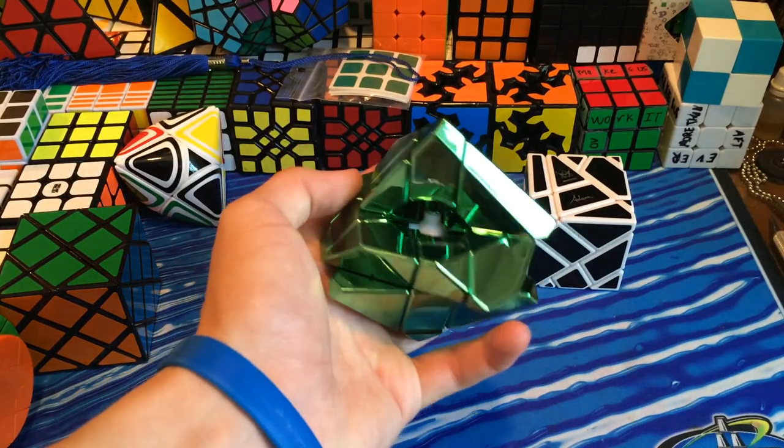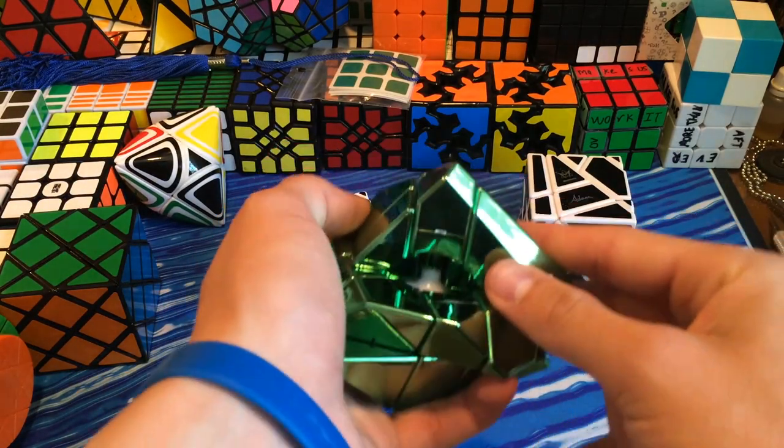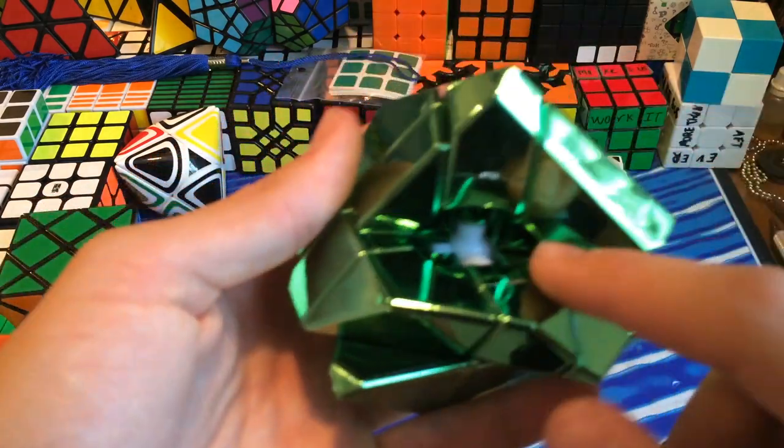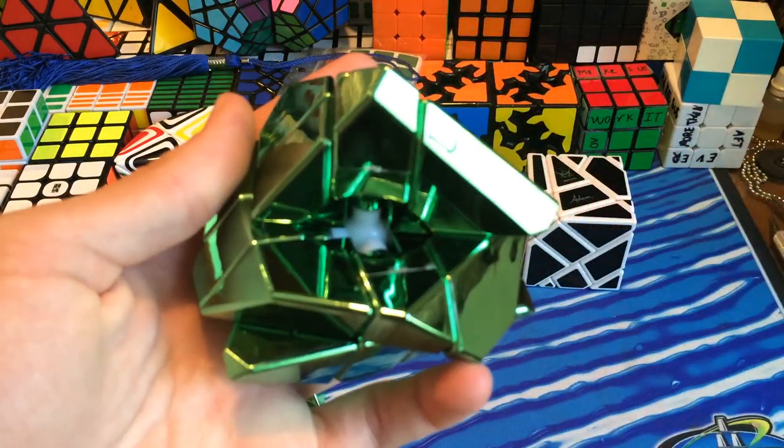And then, for those of you guys that don't know, ghost cube is just a standard 3x3 shape mod. There's the core, standard core. Actually, it looks a little like, looks like there's a little ball in there. Let's get it to focus.